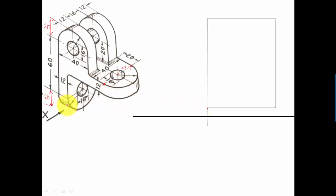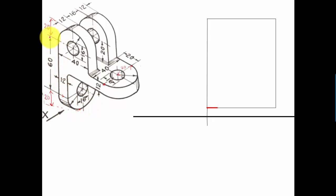We're going to kick off our drawing from this point. It appears we need to travel a distance of 12 millimeters — so let's make a 12-millimeter strip. Then from here we're going to go upward until we reach the center line. Since this is 60 and below it's 20, I'll be traveling a distance of 80 millimeters until we reach here.